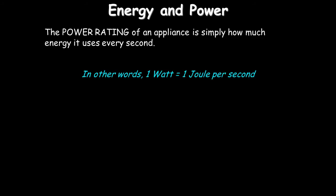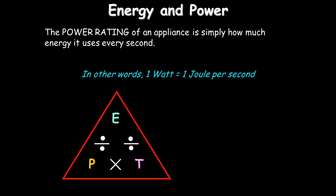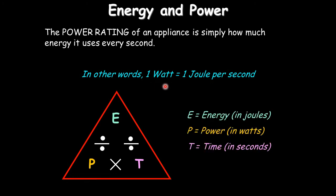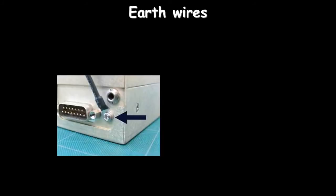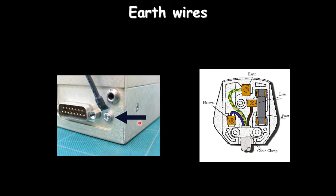Energy and power: power is how much energy is transferred per second. One watt equals one joule per second. Use a triangle to relate power, energy, and time. A 100-watt light bulb transfers 100 joules every second it is used.